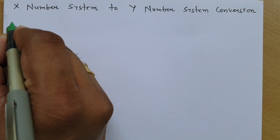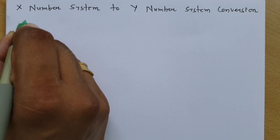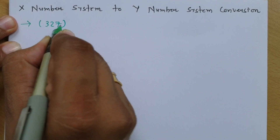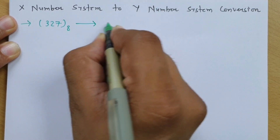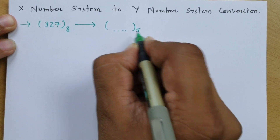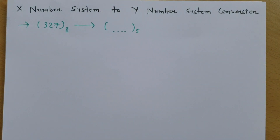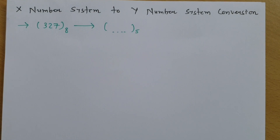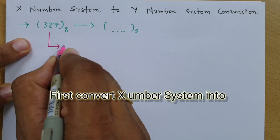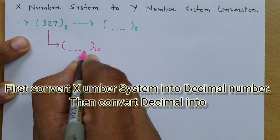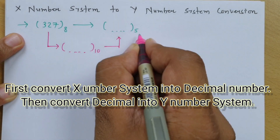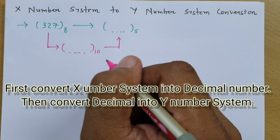The first question is: convert 327 in the octal number system into the number system with base 5. To perform this task, all we need to do is convert this number system into decimal first, and after that the decimal to base 5 conversion can be easily done.